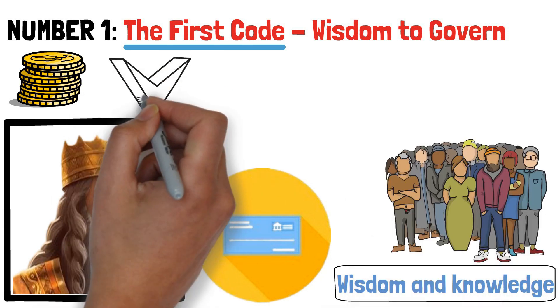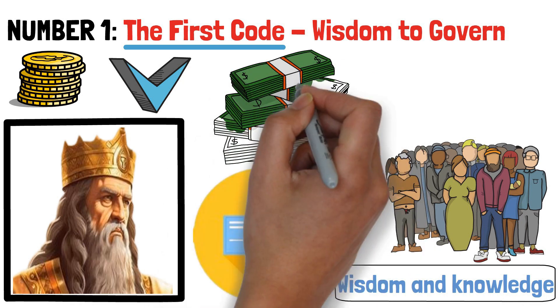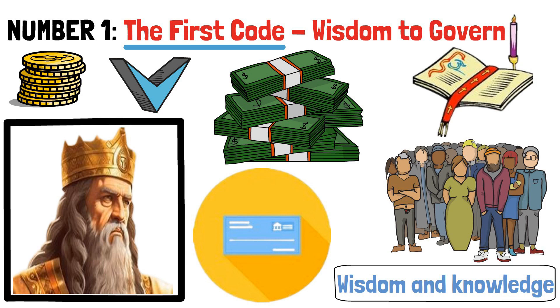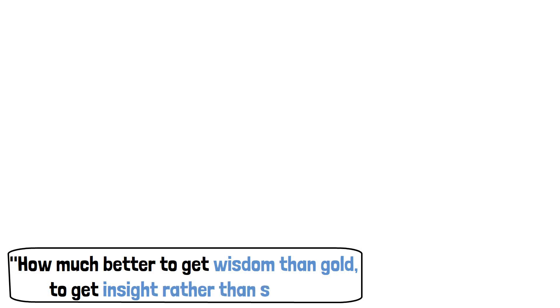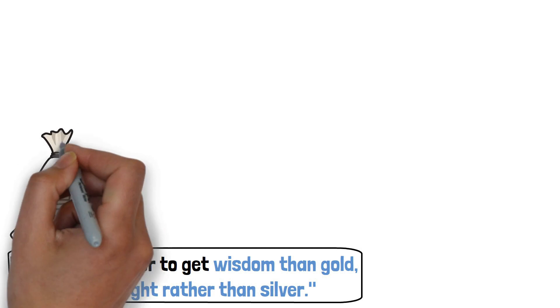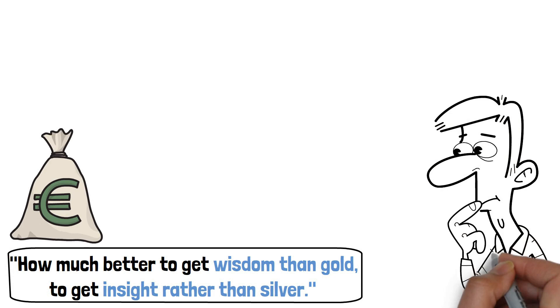Solomon, despite being the heir to King David and possessing immense wealth, acknowledges that mere riches aren't enough to sustain a kingdom. In the book of Proverbs, he eloquently expresses, how much better to get wisdom than gold, to get insight rather than silver. This showcases a profound understanding that true prosperity goes beyond material wealth. It requires the ability to discern, make wise decisions, and govern with benevolence.